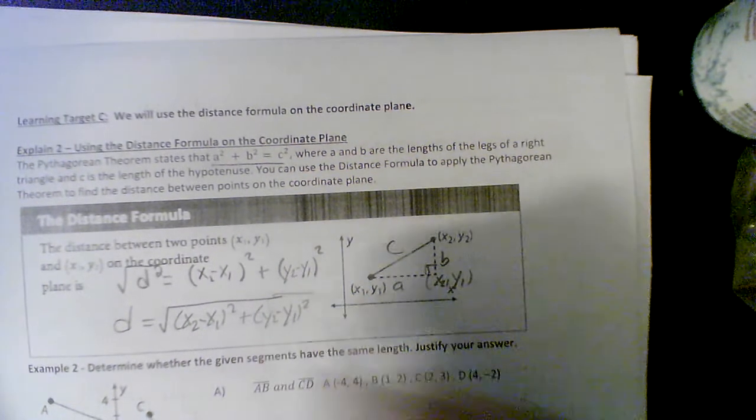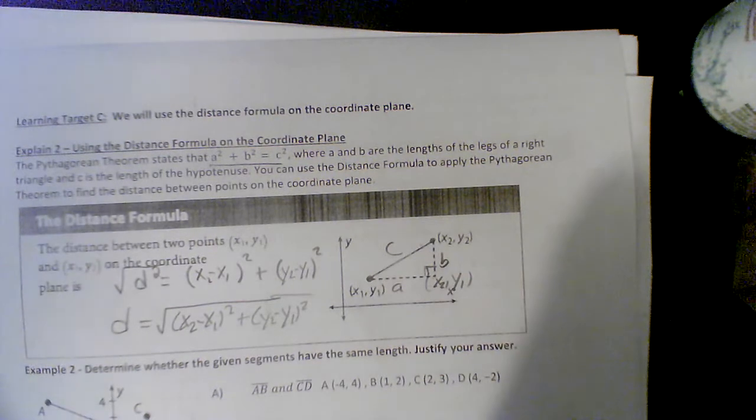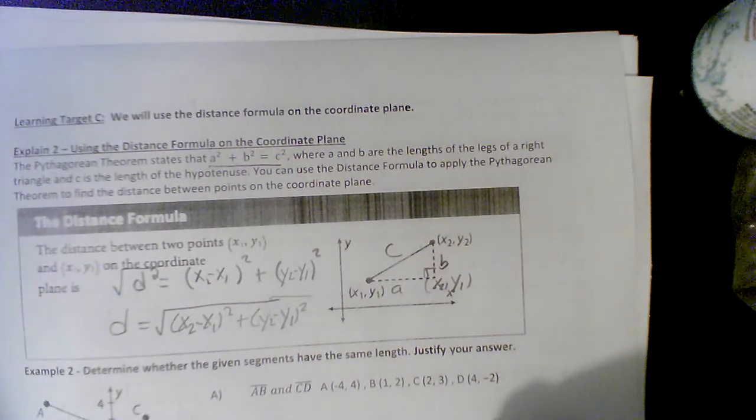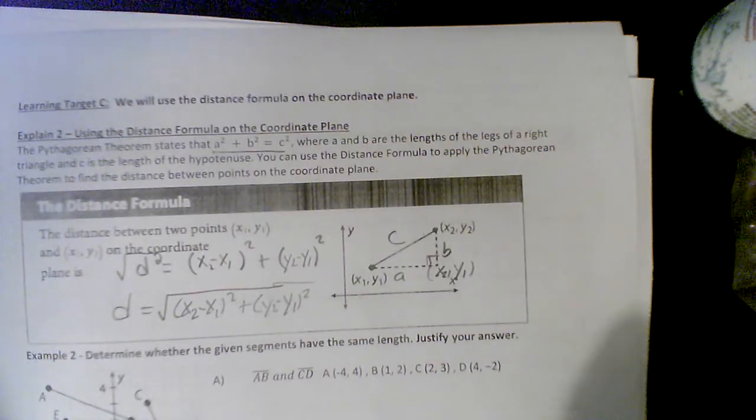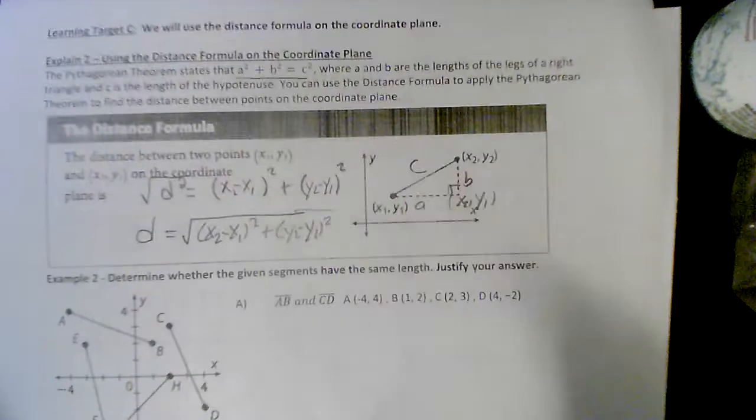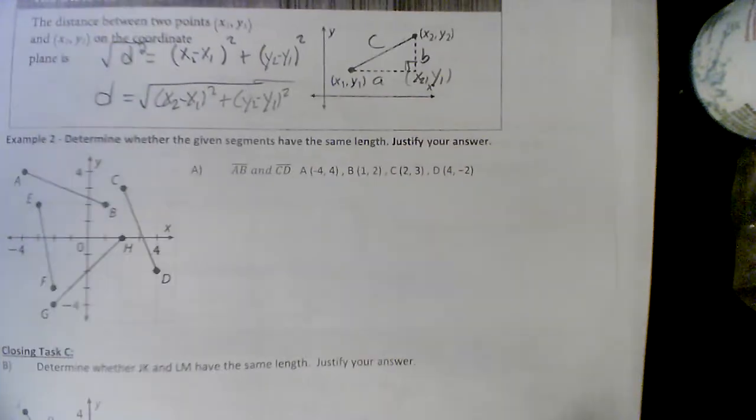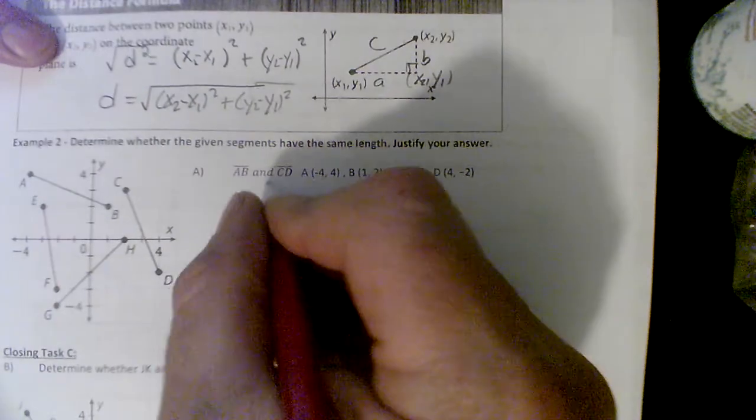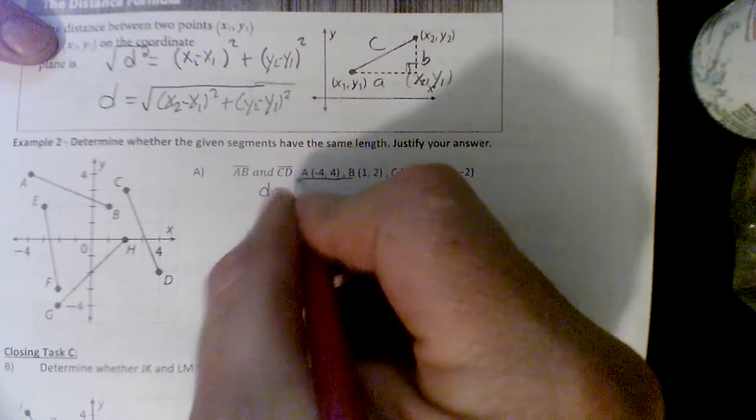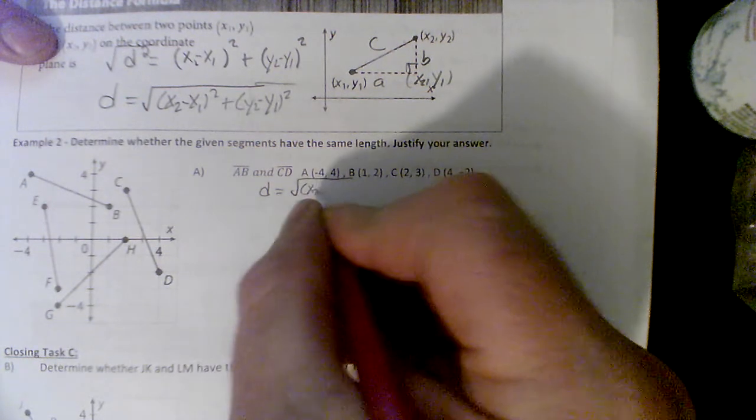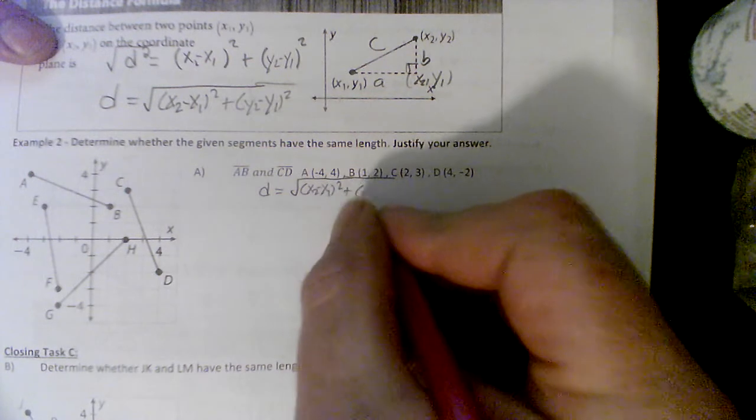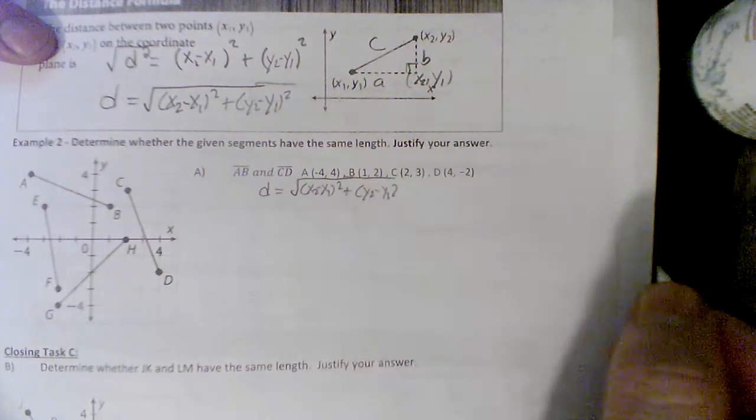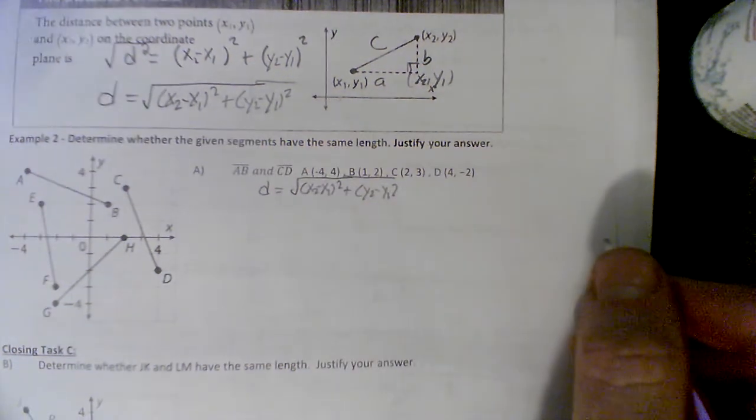Alright, so we're going to find all of these distances right here. And I'm going to just do one of these right now. So look, here's the distance formula, let's write it up here: distance equals the square root of my second x minus my first x squared plus my second y minus my first y squared. Alright, so let's go A, B.